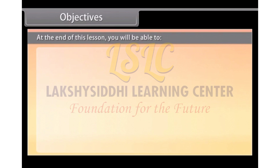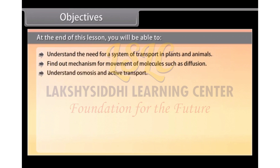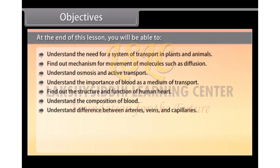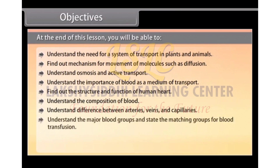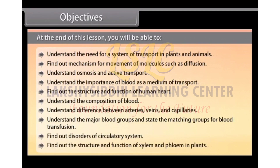At the end of this lesson you will be able to understand the need for a system of transport in plants and animals, find out mechanisms for movement of molecules such as diffusion, understand osmosis and active transport, understand the importance of blood as a medium of transport, find out the structure and function of human heart, understand the composition of blood and the difference between arteries, veins and capillaries, understand the major blood groups and blood transfusion, find out disorders of circulatory system, and find out the structure and function of xylem and phloem in plants.